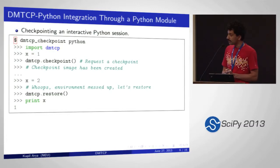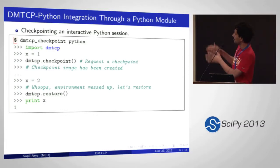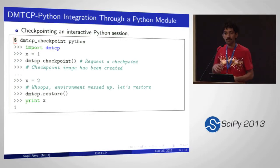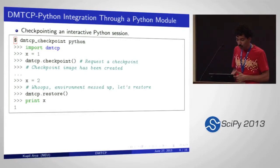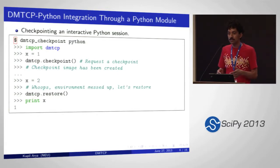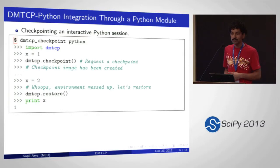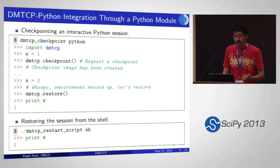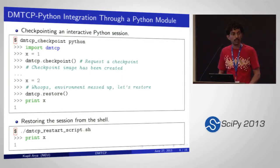To do this, we created a simple Python module. You start your Python shell with DMTCP underscore checkpoint. You do your usual stuff and import the DMTCP module. In this example, I'm setting x to 1 and then requesting a checkpoint. DMTCP.checkpoint creates a checkpoint and saves it on disk. Sometime later, if you've messed up the environment, you can say DMTCP.restore, and the value of x is printed as 1 — it took you back to the original checkpoint location.